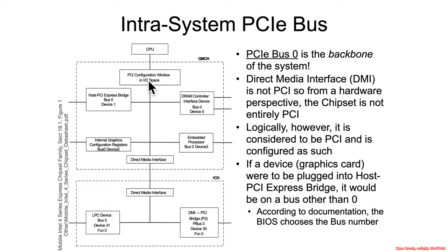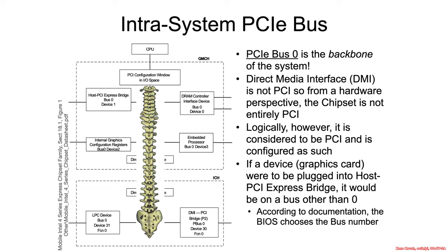We had this PCIe PCI configuration window in the IO space, so port IO was a way to access all of these various PCI devices. The backbone of this entire thing is actual PCI or PCIe, and then that DMI link is very similar to PCI — it's not exactly the same and not PCI standards compliant; it's Intel's own thing. But at the end of the day, its primary job, whether from the CPU to the PCH or the GMCH to the ICH, is really just routing things through this PCI backbone.